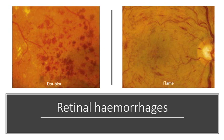Retinal hemorrhages can appear either in the retinal nerve fibre layer, where they have a flame-like appearance, or they can be intra-retinal and located in the middle layers of the retina, giving them a red dot-blot appearance. These dot-blot hemorrhages are a larger version of microaneurysms and look similar on the retina.